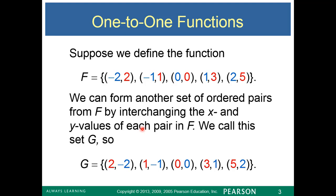What is a one-to-one function? We know what a function is. A one-to-one function can be formed by flipping the ordered pairs of a function, but not all functions are one-to-one functions. So if you have this function here — negative two, two; negative one, one; zero, zero; one, three; two, five — if we switch all of the ordered pairs, in other words flip the x's and y's, then we get another function, in this case g.